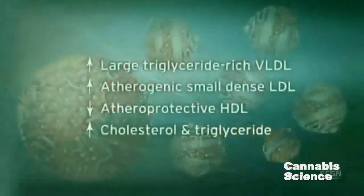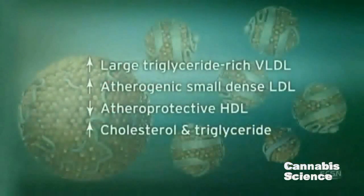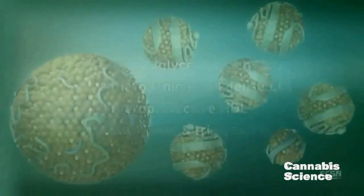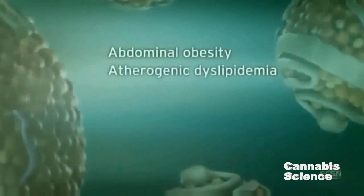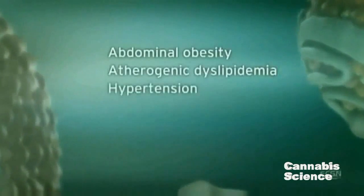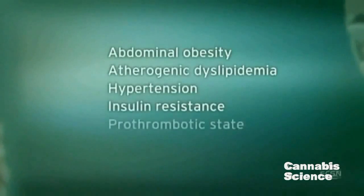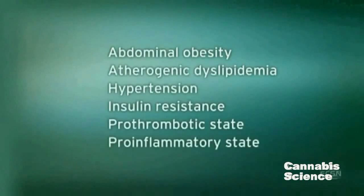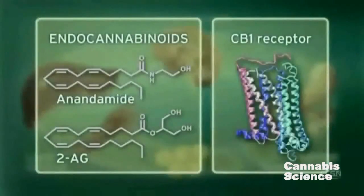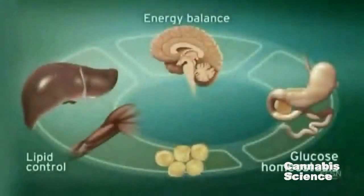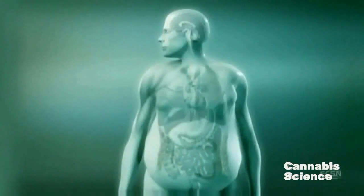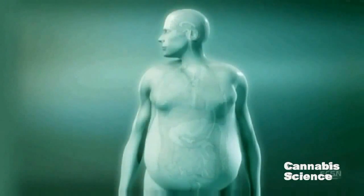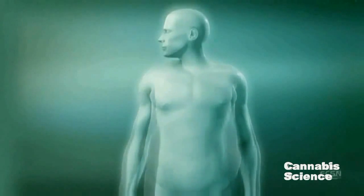Metabolic dysregulation leads to a constellation of symptoms including abdominal obesity, atherogenic dyslipidemia, hypertension, insulin resistance, pro-thrombotic state, and pro-inflammatory state. As basic and clinical research progresses, we will continue to increase our understanding of the central and peripheral endocannabinoid system and its role in the regulation of metabolic function.